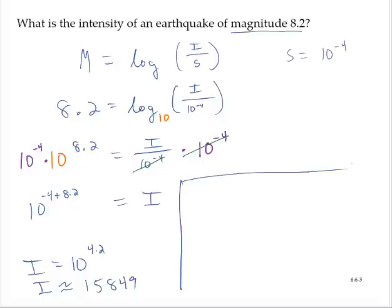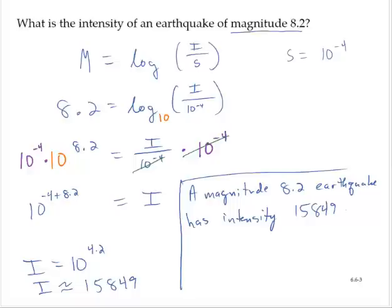So the conclusion, a magnitude 8.2 earthquake has intensity 15,849.